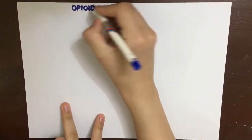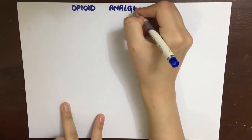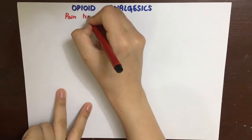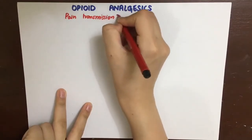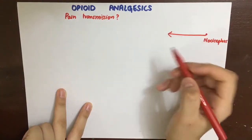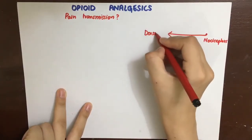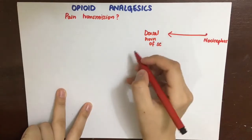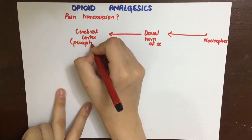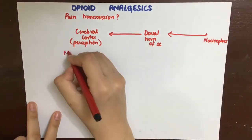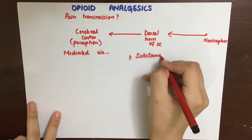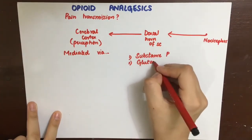Before looking at opioid analgesics in detail, let's first see how pain is transmitted. The nociceptors present in various tissues such as skin and even internal organs can be stimulated by any sort of stimulus — mechanical, thermal, or chemical. Pain is then transmitted to the dorsal horn of the spinal cord and then to the cerebral cortex for perception. This transmission is mainly mediated by neurotransmitters, specifically substance P and glutamate.